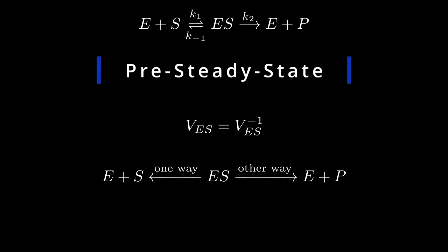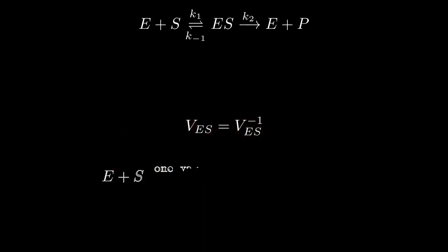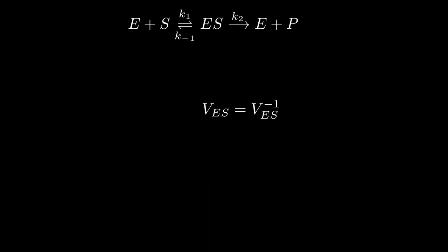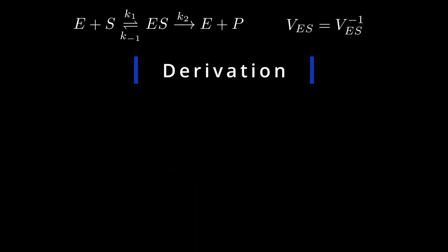Enzyme kinetics without the steady-state assumption is called pre-steady-state kinetics. In this case, the quantification is more complex because the assumptions we made do not apply to pre-steady-state kinetics. We will leave that for now. Now we have our two important assumptions, let's start deriving the quantification.